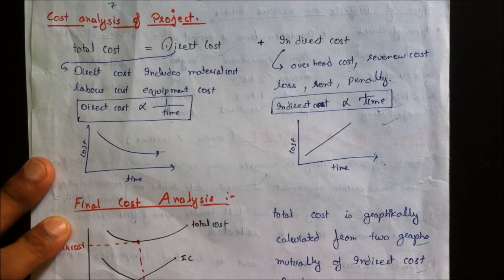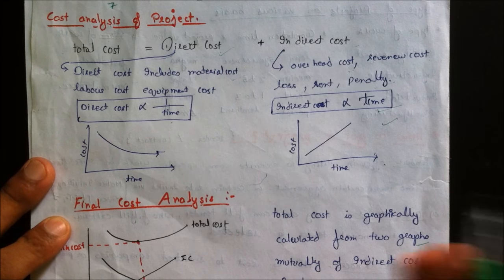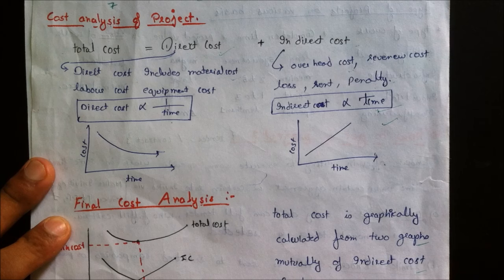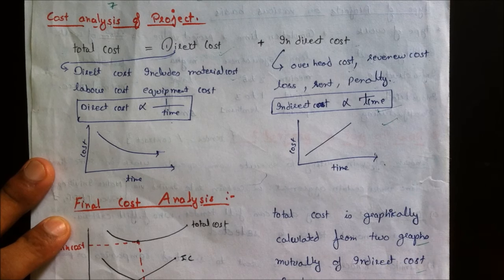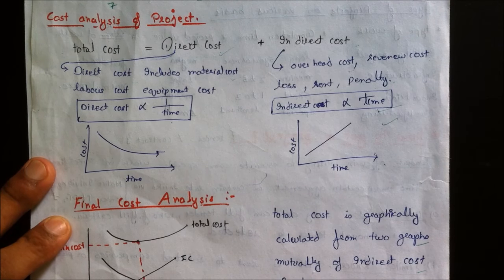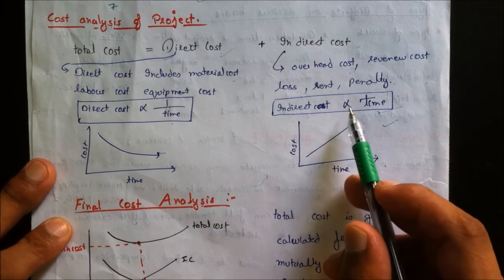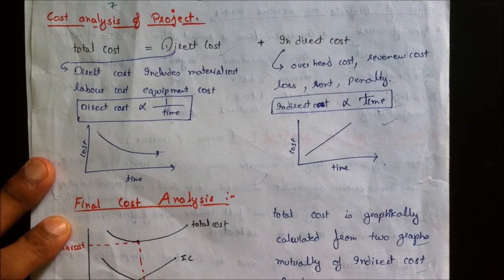Indirect cost includes rent, revenue loss, and cost of penalties over the project duration. For example, a temporary garage used for storage incurs rent over time. Therefore, indirect cost is directly proportional to time.